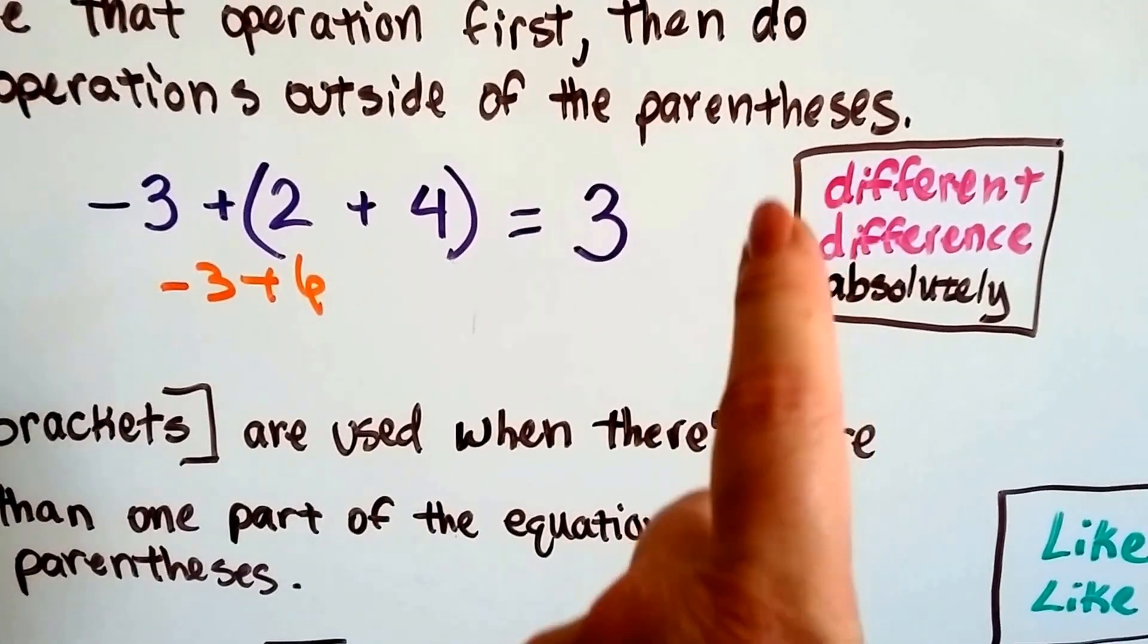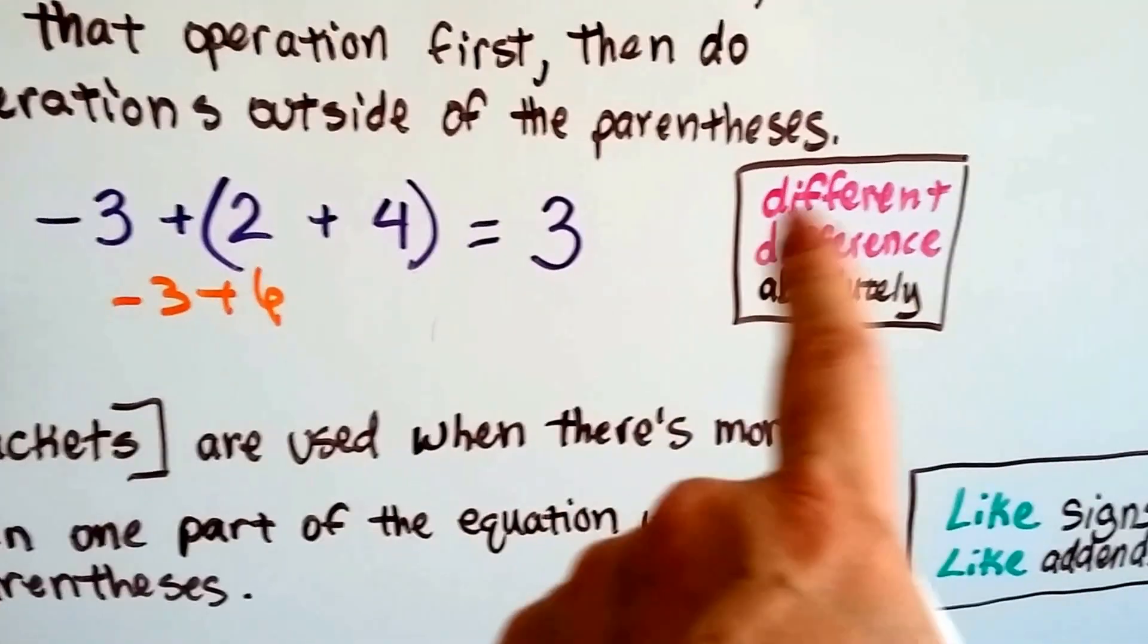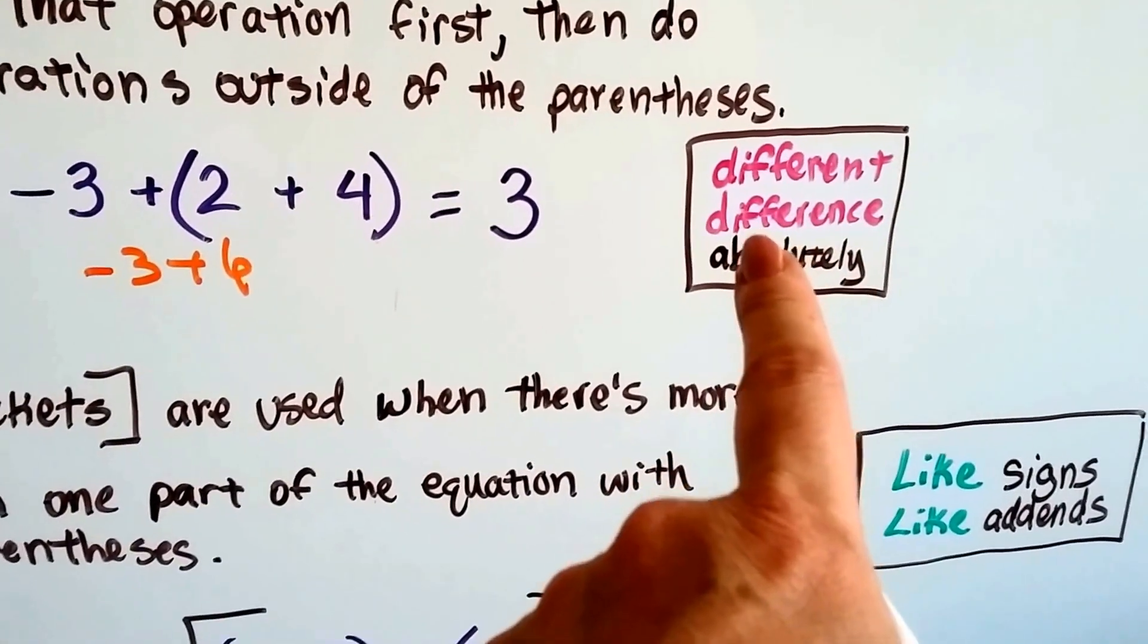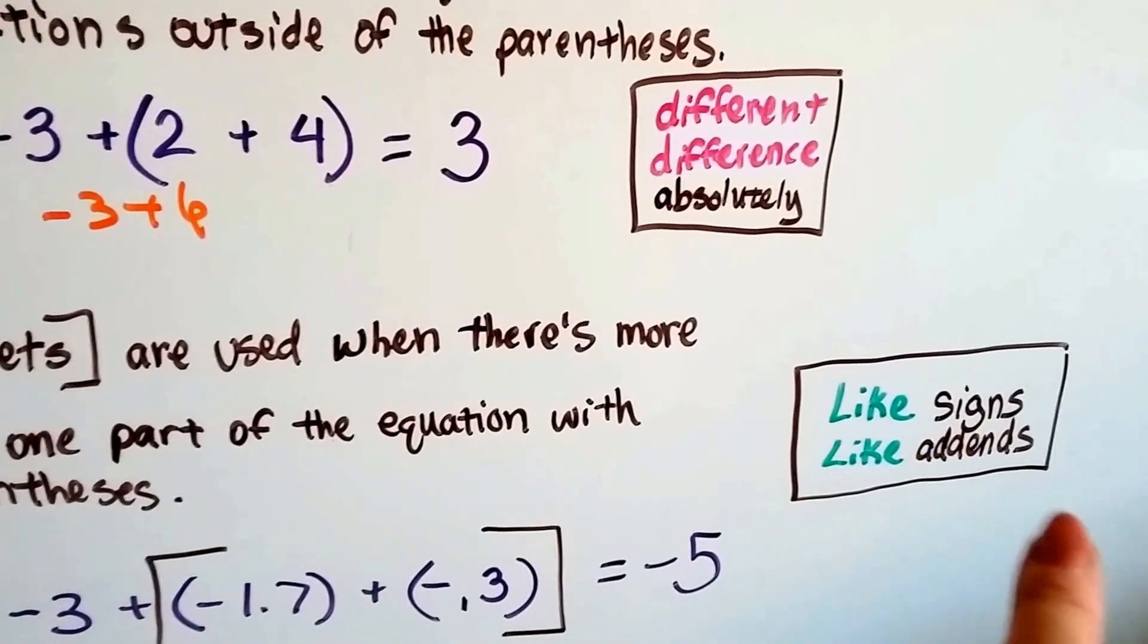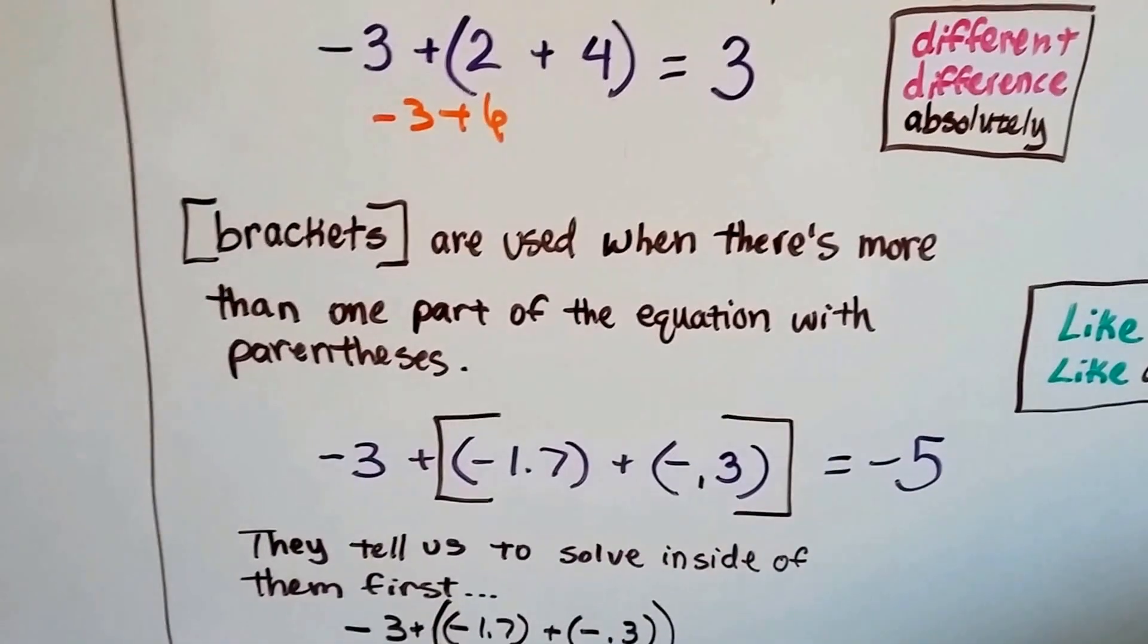If they're different signs, we find the difference. Absolutely. That's absolute value. Okay? So if you can remember different, difference, absolutely, and my little like signs, like addends, it's going to help you when you add negative and positives. Okay?